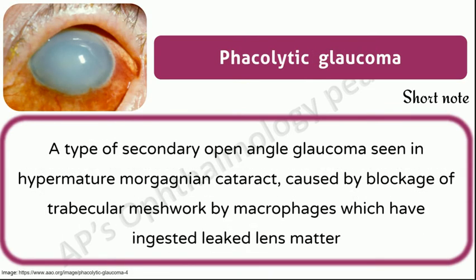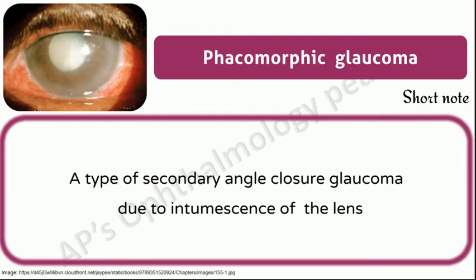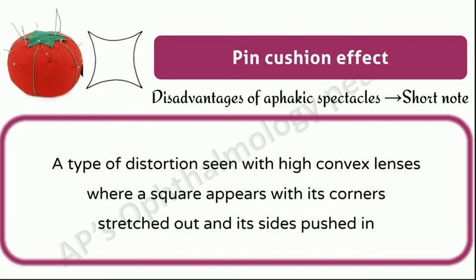Phacolytic glaucoma: a type of secondary open-angle glaucoma seen in hypermature Morgagnian cataract, caused by blockage of the trabecular meshwork by macrophages which have ingested leaked lens matter. Phacomorphic glaucoma: a type of secondary angle-closure glaucoma due to intumescence of the lens. Pin cushion effect: a type of distortion seen with high convex lenses where a square appears with its corners stretched out and its sides pushed in.